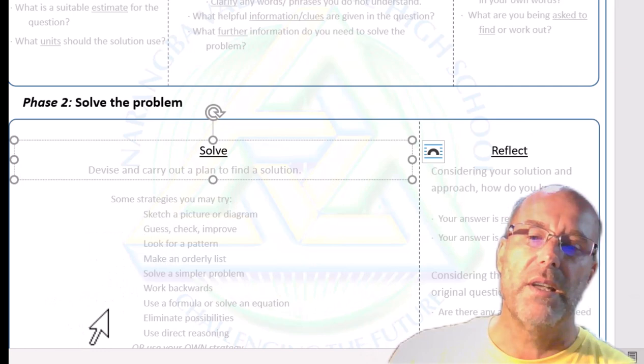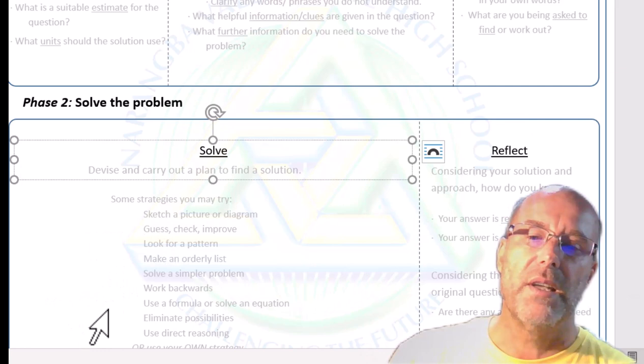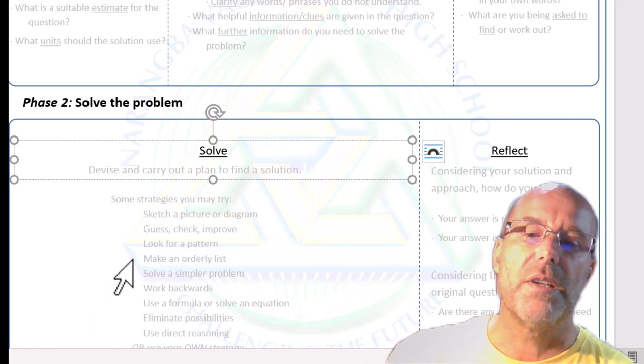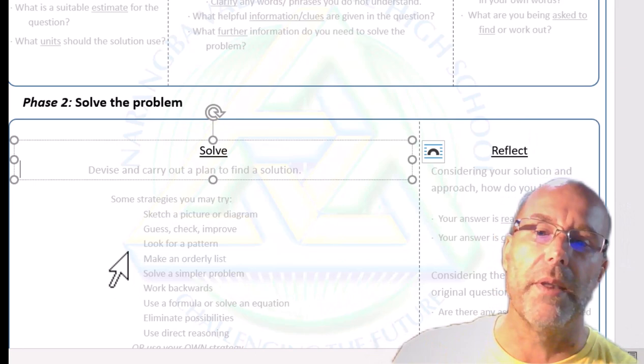That can be good and other times it can be very inefficient depending on the context. But it can be looking for a pattern as you might be able to see down there. This is guess, check and improve, but there's also using an equation, make an orderly list, solve a similar problem that's simpler and then work up to the more complex one. That's a real winner that one there. Drawing a diagram is often very helpful, in fact sometimes is crucial.